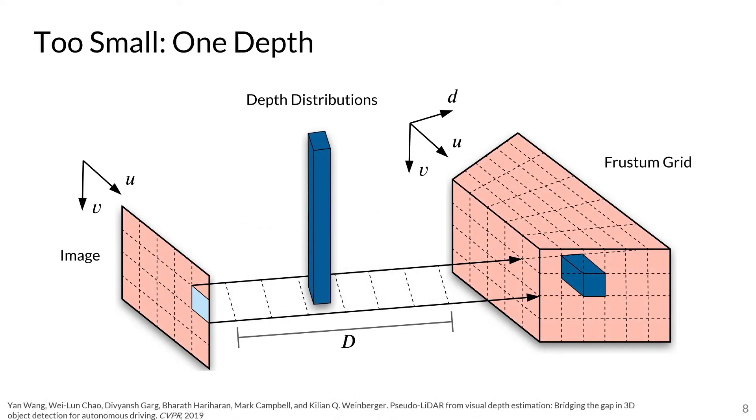The opposite is the too-small approach. Here, a single depth value is estimated for each pixel and projected to a single location in 3D space. This approach suffers where depth estimation is poor, as image pixels will often be projected to incorrect locations without a consideration of depth estimation uncertainty.